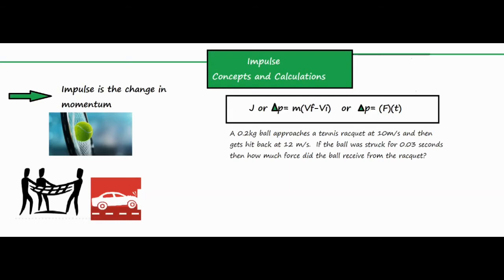In this video I'm going to be talking about impulse concepts and calculations. Impulse is the change in momentum. To find the change in anything, you always take the final value minus the initial value. Delta p, which is the change in momentum known as impulse, equals mass times vf minus vi. You get that by taking the final momentum, subtracting the initial momentum, and factoring out m to get m times (vf minus vi).